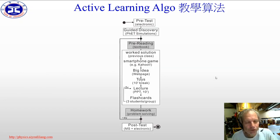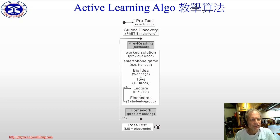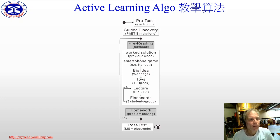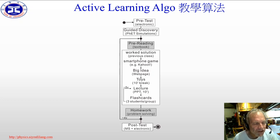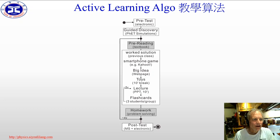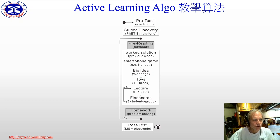So how are we going to try to do this? Our algorithm is as follows. We start each unit with an electronic pretest so students can assess what they know and what they do not know. We then continue using a guided discovery making use of PHET simulations — students are guided through answering questions and hopefully discovering the equations for that section. This is then followed by a pre-reading of the relevant textbook section before that day's lecture.